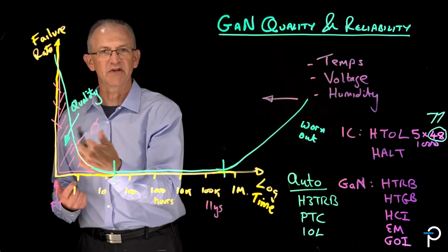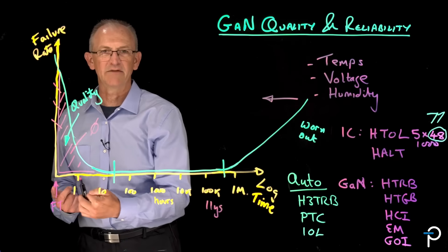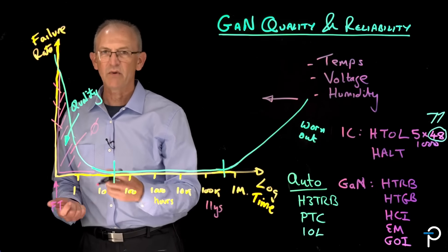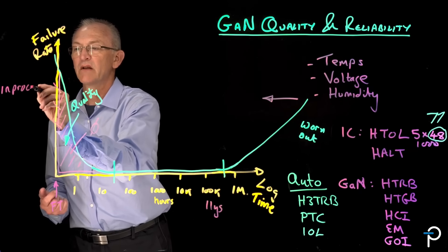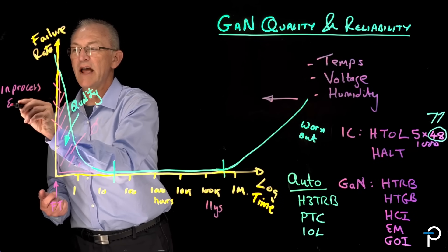So how do we find these parts and eliminate them before they even get to final test? Well, the way we do that is firstly, our in-process monitor of our EPI.